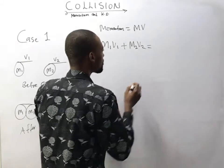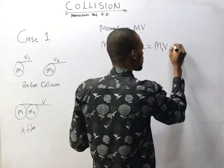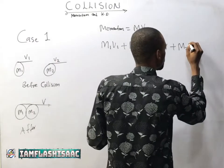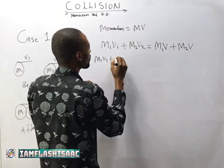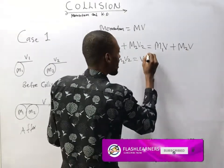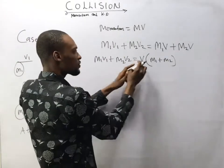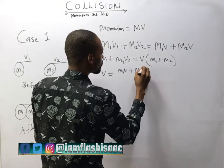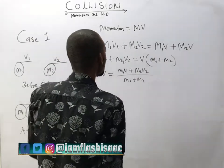After collision, there is no longer v1 and v2. The momentum of the first body becomes m1 times v, and the second body retains mass m2 with the same common velocity v. So momentum after collision is m1v plus m2v, which factorizes to (m1 plus m2) times v. The common velocity is therefore v equals (m1v1 plus m2v2) all over (m1 plus m2).